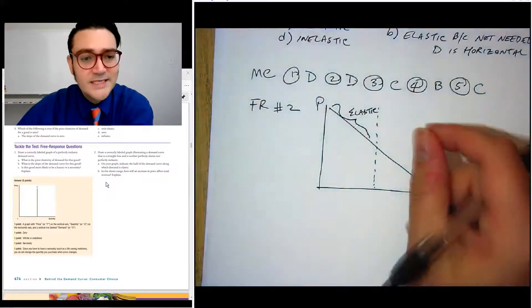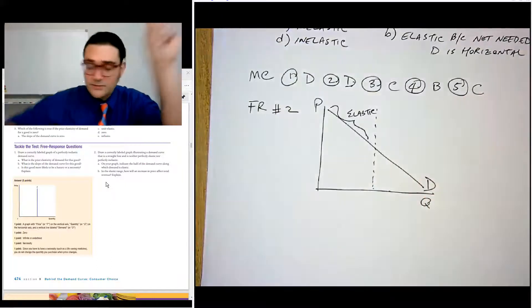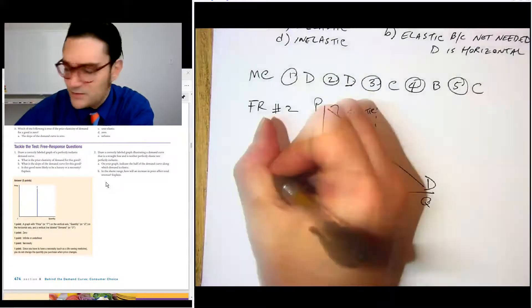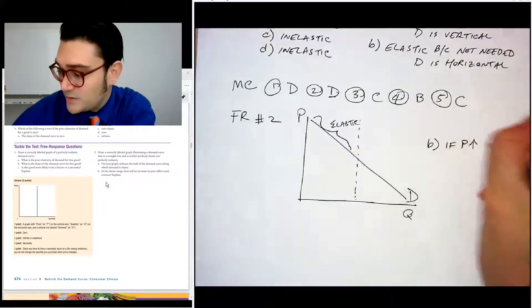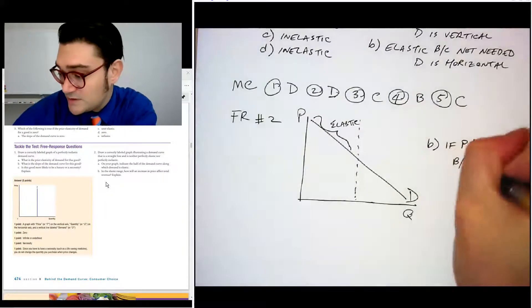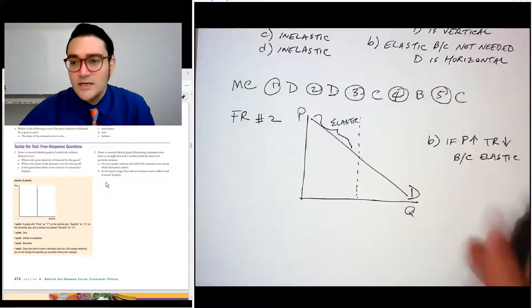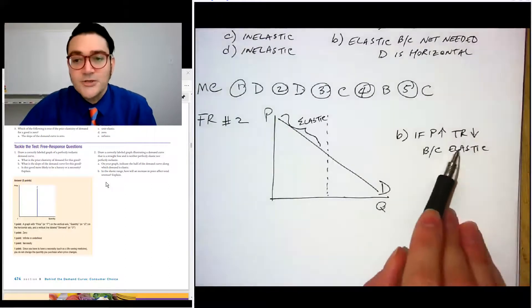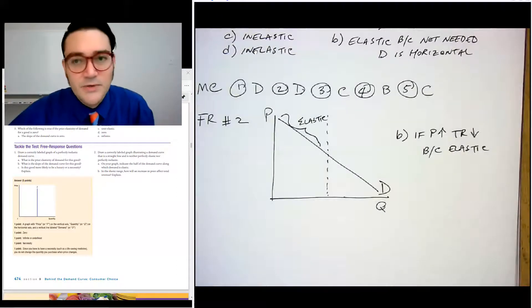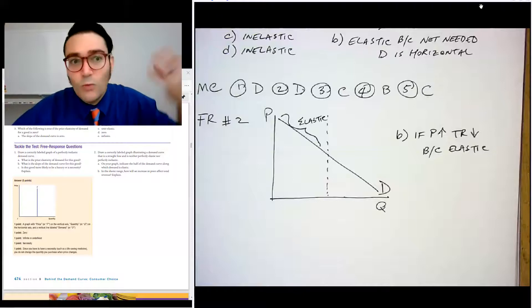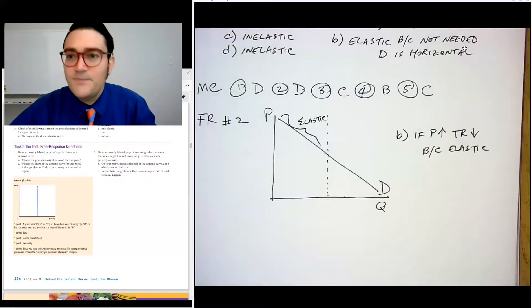In the elastic range, how will an increase in price affect total revenue? So if the price goes up, total revenue will go down. If price goes up, total revenue decreases because it's elastic. This is kind of strange for them to ask you to explain because it is sufficient to actually just say because it's elastic. Like that's kind of the explanation. I don't know what else they want you to say there. Probably something about why this process happens. But if you understand enough to say that, then you're good.